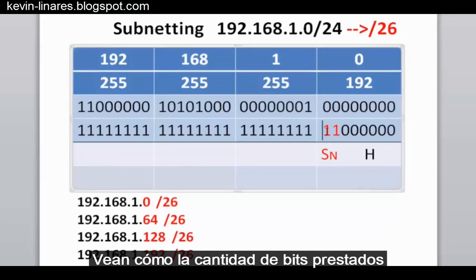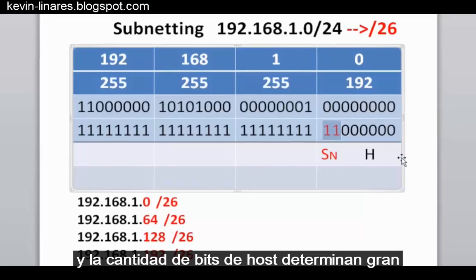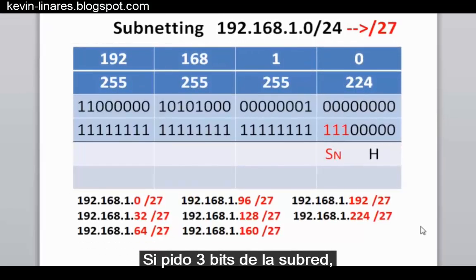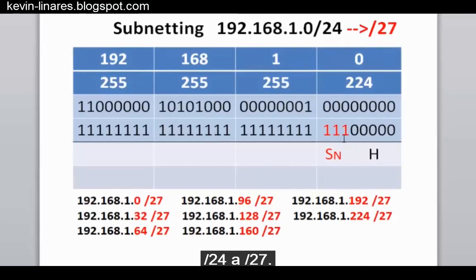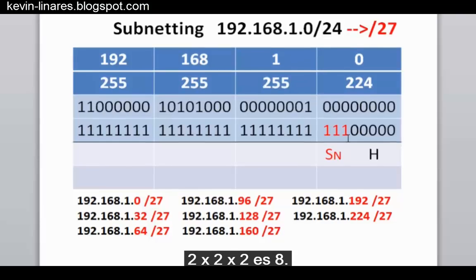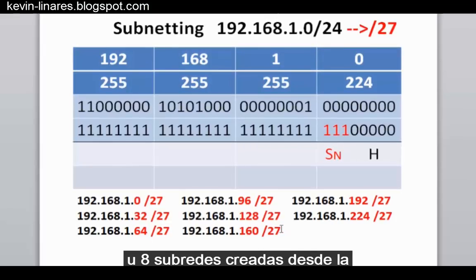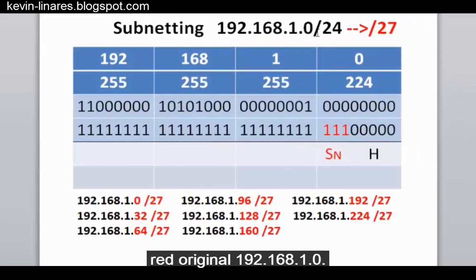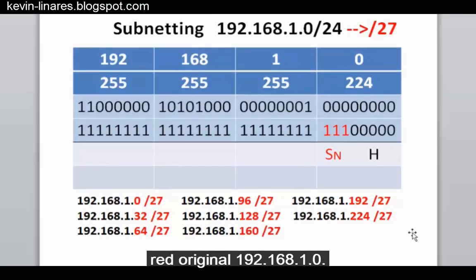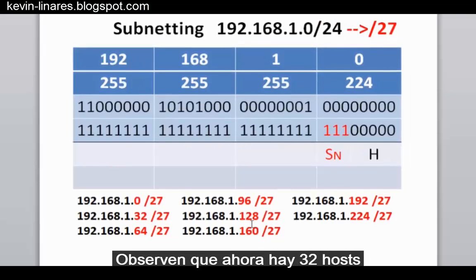Notice how the number of borrowed bits and the number of host bits determines a lot about the subnet. Borrowing three subnetwork bits gives us a slash 27. We have three subnet bits, and two to the third power is 8, so we now have eight subnetworks created from the original 192.168.1.0 network. Each subnet is slash 27, with 32 host addresses or 30 usable hosts per subnetwork.